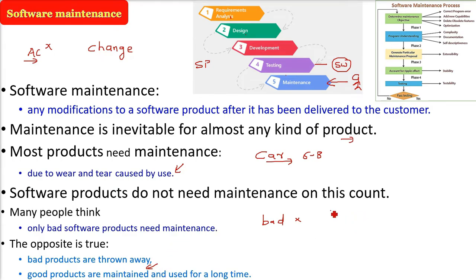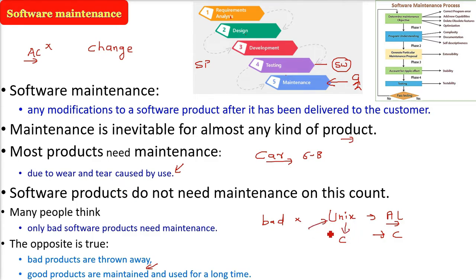For example, when Unix came, it was coded or implemented in assembly language — we have known about 8085, 8086, microprocessor language, etc. Now when C language came, Unix was rewritten in C language. Why? Because we wanted to keep working on Unix. We don't throw it away. This was a good product, so we need to maintain it, from the time it was created till now.